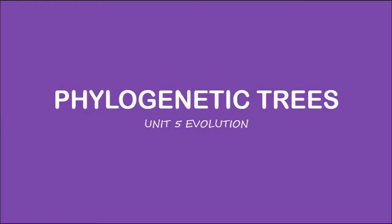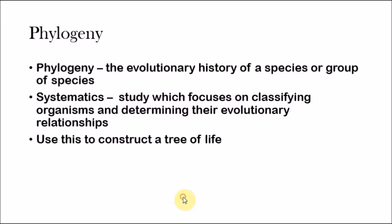Hey guys, my name is Shreyas and welcome to Simple Biology. In this video we're going to be talking about phylogenetic trees. Phylogeny is the evolutionary history of a species or group of species — basically, what are all the ancestors of a species and how those ancestors evolved to what that species is today. Systematics is a study which focuses on classifying organisms and determining their evolutionary relationships. Scientists use phylogeny and systematics to construct a tree of life, which shows the common ancestor and everything branching out from it.